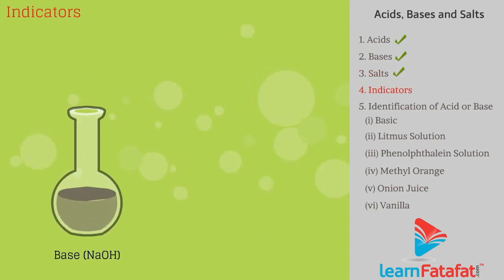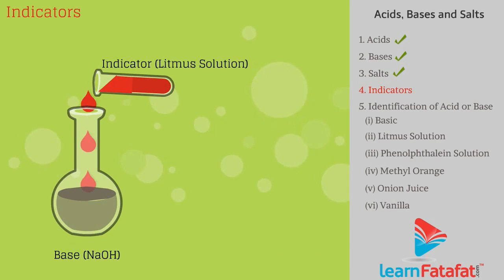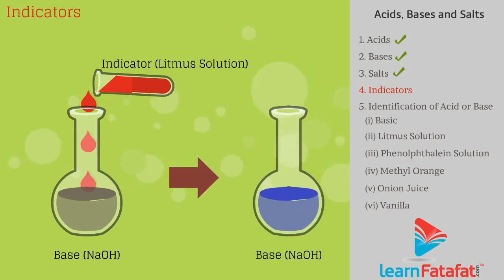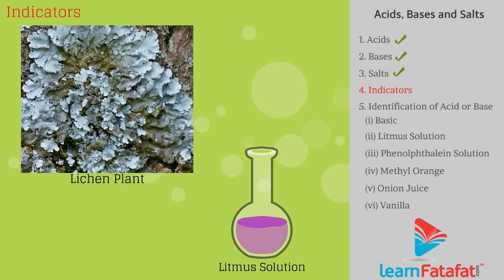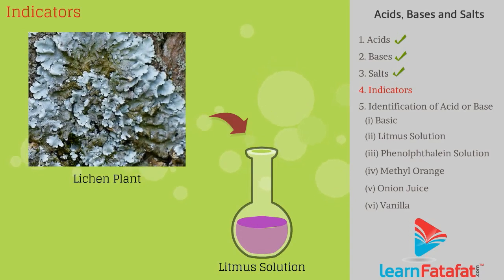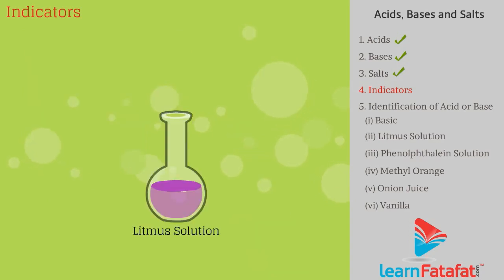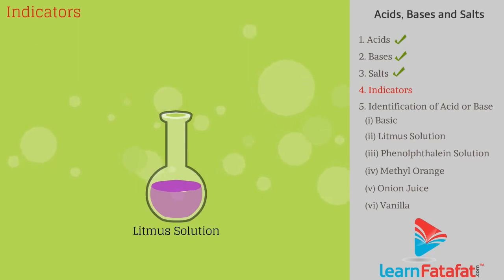Indicators are the chemicals that are used to find the nature of a solution — that is, whether it is acidic or basic. Litmus solution is a purple dye. It is extracted from the lichen plant. Neutral litmus solution is purple in color, but when exposed to acid or base it changes color.